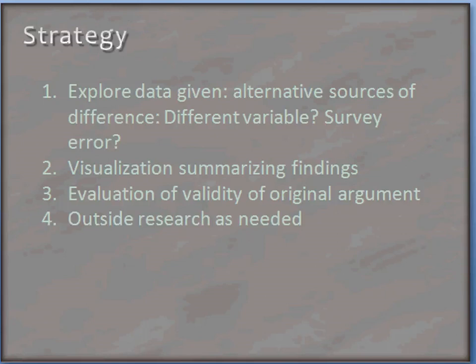In the previous module, we examined Catherine Rimpel's argument in her article on interracial marriage. We devised a strategy that will help us to evaluate her argument. This strategy had four steps. First, we're going to explore the data that was given to us and determine whether there are alternative sources of differences among the incomes of couples of various races and in various interracial marriage combinations.